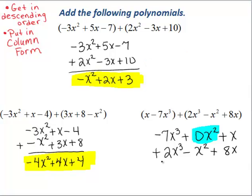So we'll work on the addition. Negative 7 plus 2 becomes negative 5, so negative 5x cubed. Zero minus an x squared, well that stays the same, that stays unchanged: minus x squared. Plus x plus 8x, which is 9x. So we have added the following given polynomials using descending order and column form.